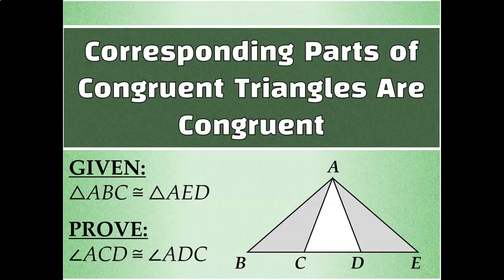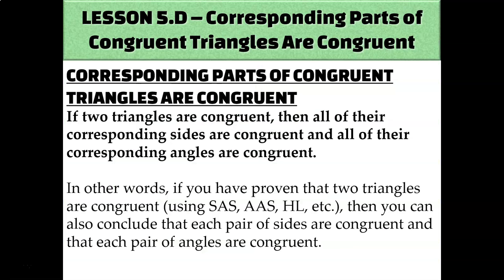Let's talk about how we can use the fact that two triangles are congruent to each other to prove other things about those triangles. Because if two triangles are congruent to each other, then all of their pairs of corresponding parts are congruent — all of their pairs of corresponding angles and all of their pairs of corresponding sides would have to be congruent.